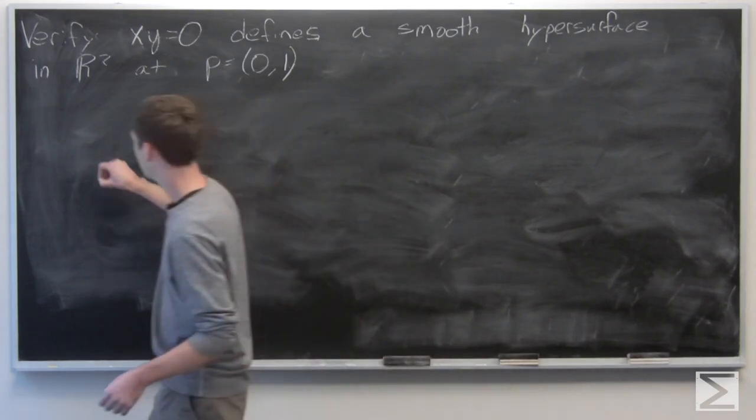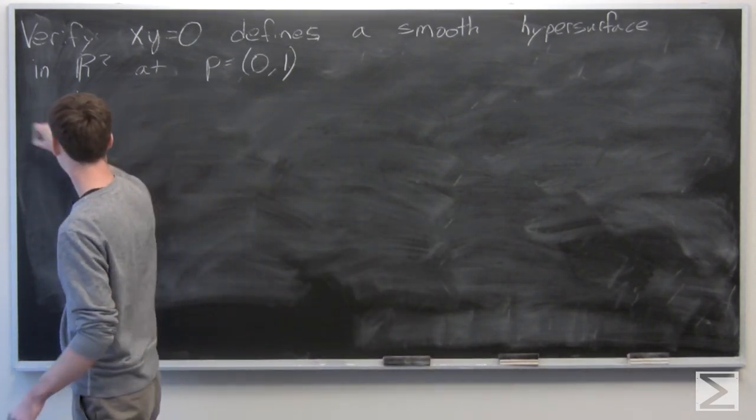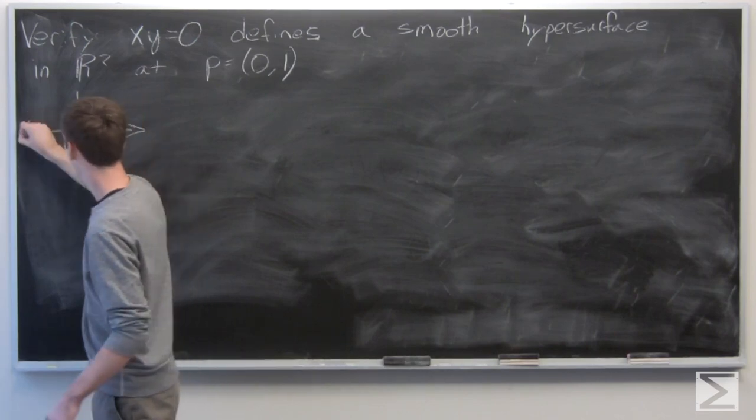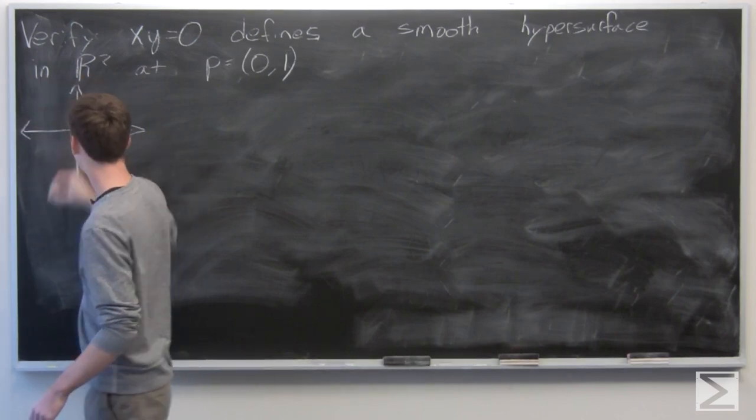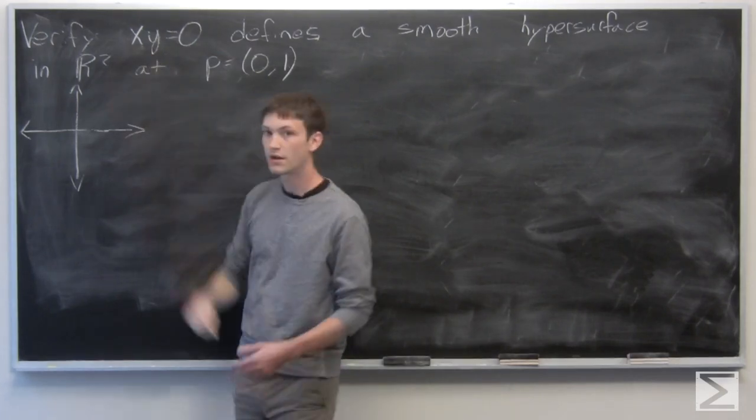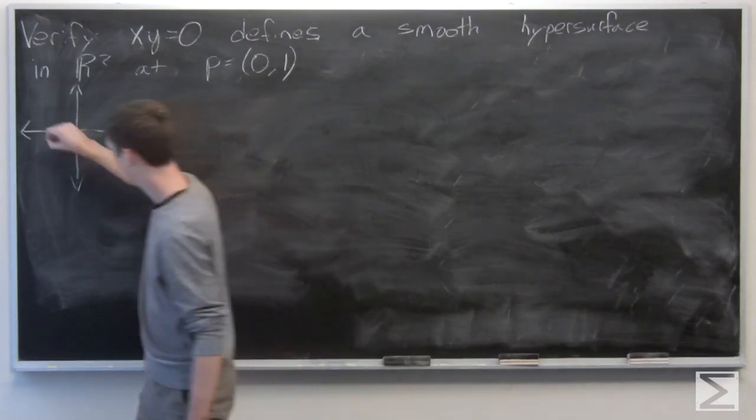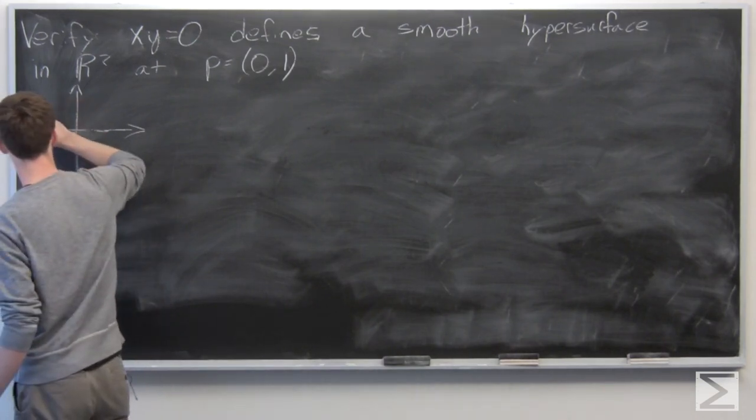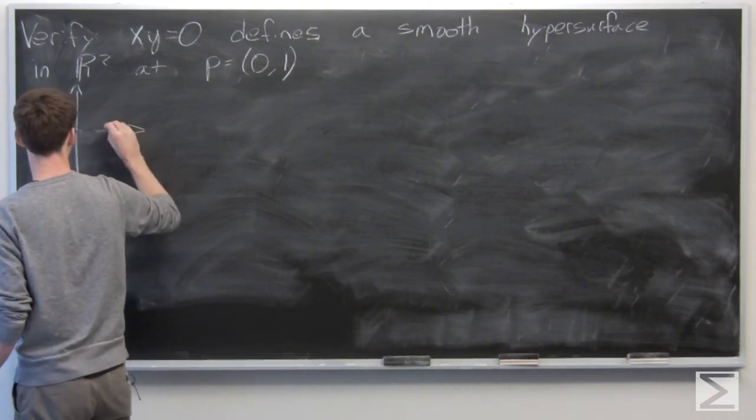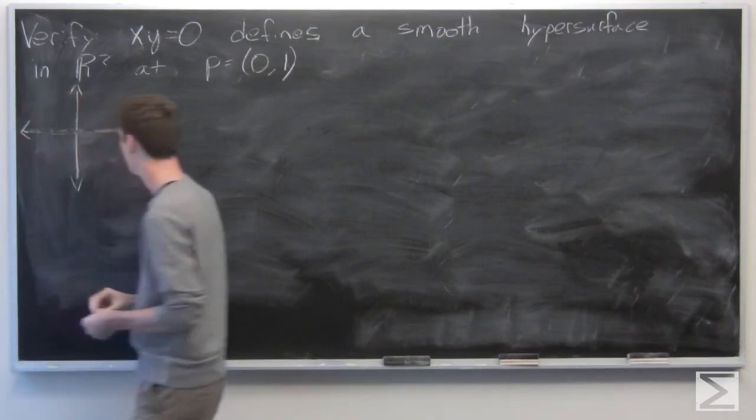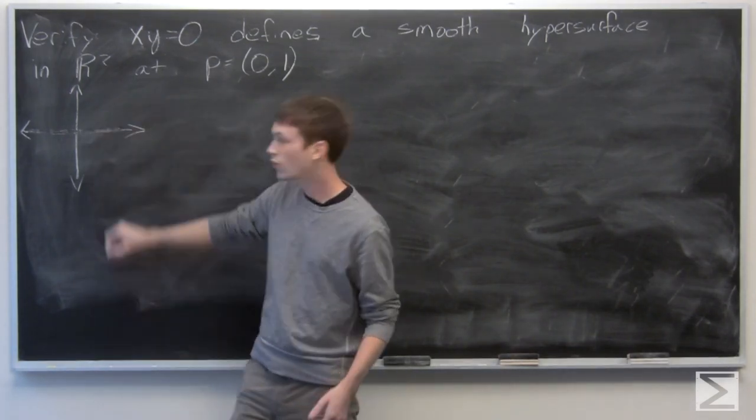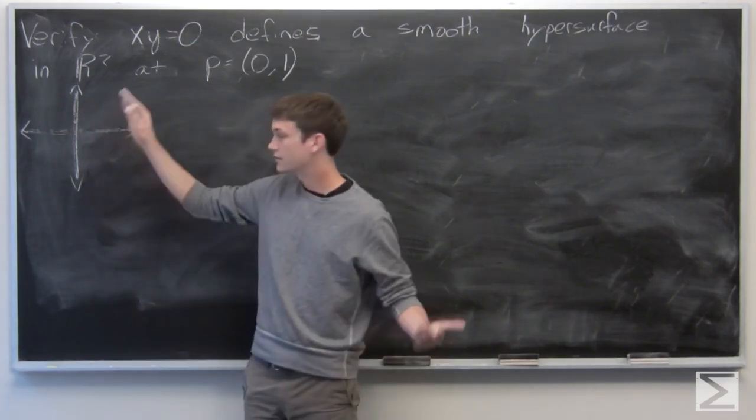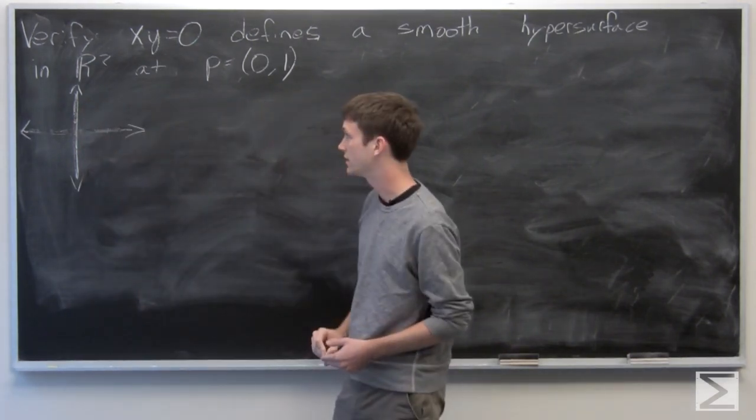So first let's just sketch a little graph of what xy equals 0 looks like in R2. We know that x could be 0, so it's all points on the y-axis, or y could equal 0, so we have all points on the x-axis. So it just makes up the xy-axes.